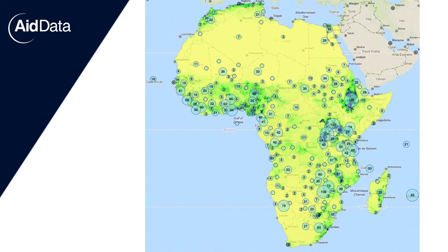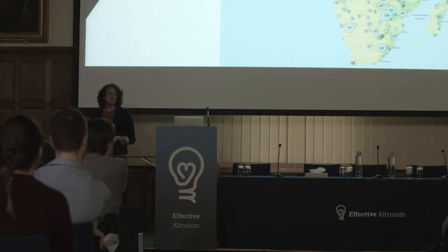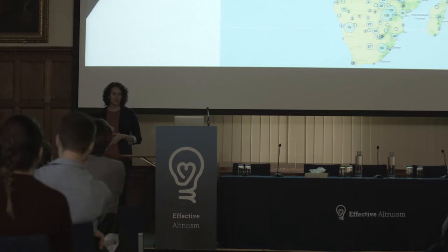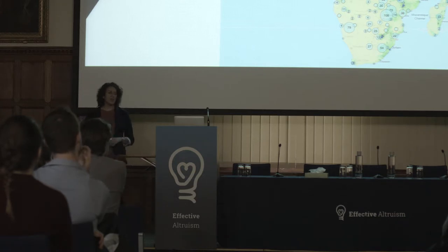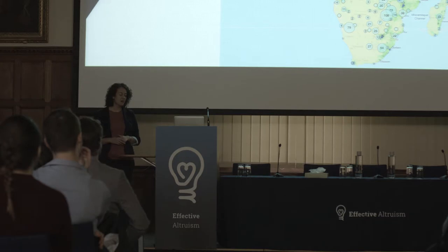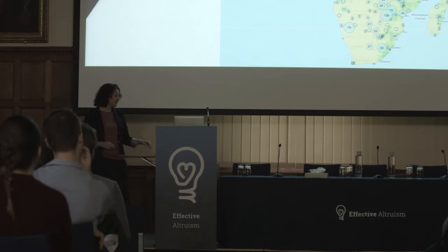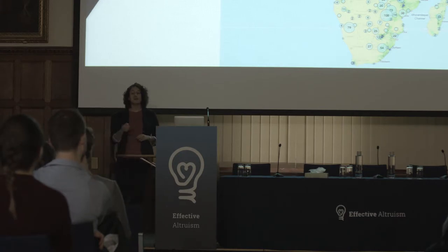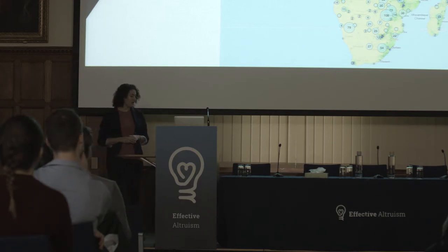AidData has pioneered a methodology to fill in this blind spot. We use publicly available media resources and a rigorous methodology to triangulate media reports against each other to uncover development projects funded by emerging donors. To date we've identified over 5,500 projects funded by China, Saudi Arabia, Qatar, and Kuwait. This information is especially critical for countries like Angola, where Chinese development finance represents more than half of all external development funding received since 2000. AidData is also tracking domestic public expenditure and foreign direct investment to fill in the total resource envelope.